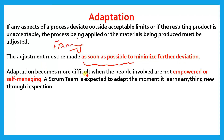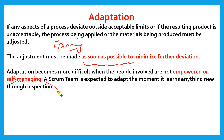Adaptation becomes more difficult when the people involved are not empowered or self-managing. Self-managing means the developers should know how to do the work, when to do the work, and who is responsible for the particular work. A Scrum team is expected to adapt the moment it learns anything new through inspection.